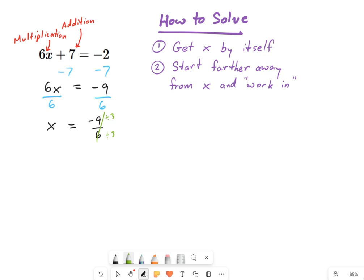So that's going to cross out, and that's going to give me negative 3 over 2. So that would be my answer. That's how to solve a linear equation.